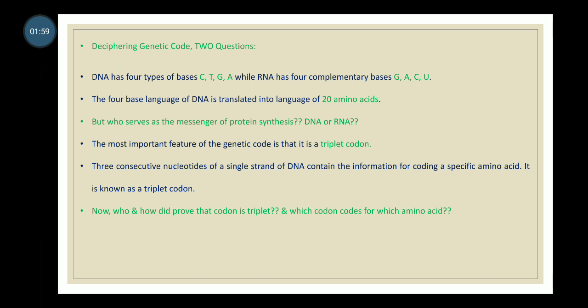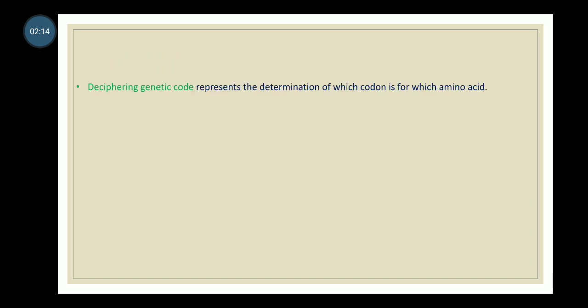Another question is: how and who proved that the codon is triplet, and which codon codes for which amino acid? Deciphering the genetic code represents the determination of which codon is for which amino acid.